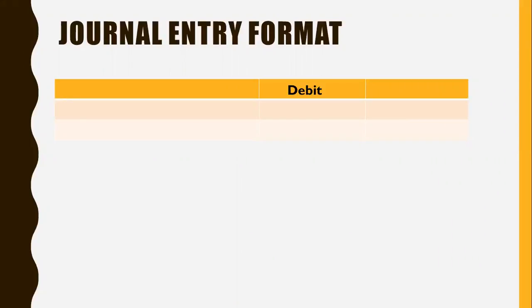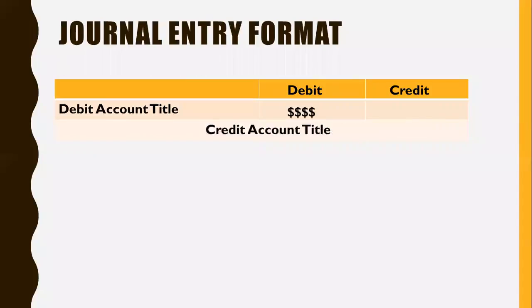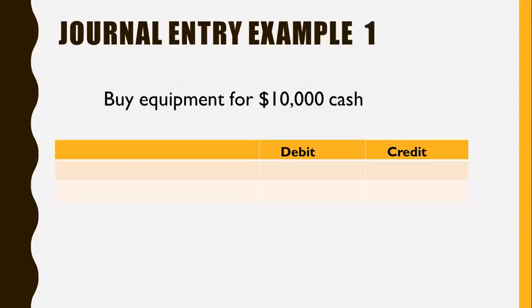The journal entry format is just this little table. Debits go in the left number column and credits go on the far right. In the first column you put the account name, so debit account names come first with the amount under the debit column. Then the credit account title comes second, indented just a little bit to show it's a credit, and then the credit amount goes on the right.